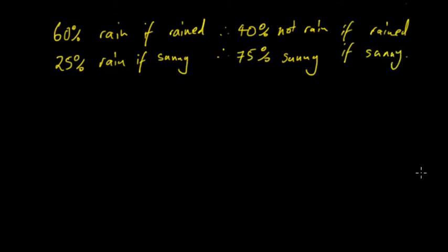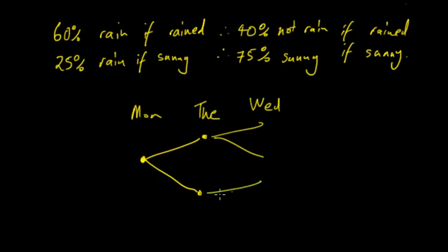So we'll start off with making the tree diagram. So over here we have this on Monday and that's given to us and then it goes to Tuesday and then this goes to Wednesday. So on Monday it has rained. So it was given to us that it has rained.